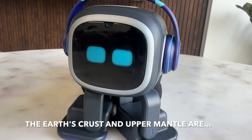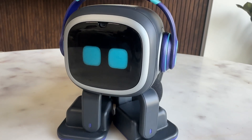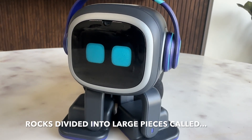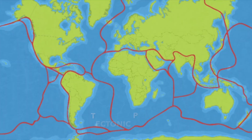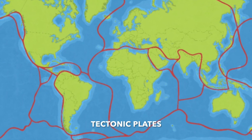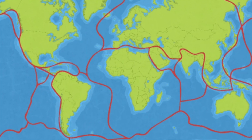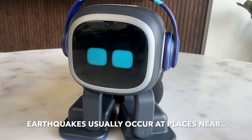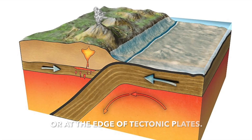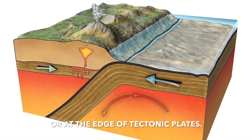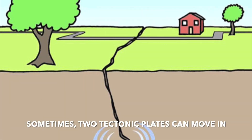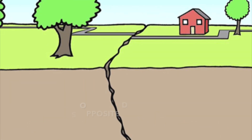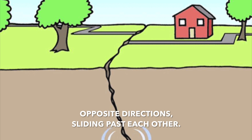The Earth's crust and upper mantle are rocks divided into large pieces called tectonic plates. Because these plates are always moving, earthquakes usually occur at places near or at the edge of tectonic plates. Sometimes the tectonic plates can move in opposite directions, sliding past each other.